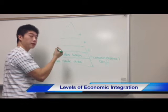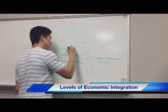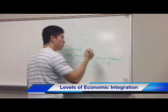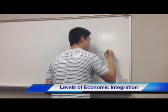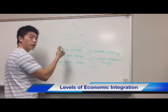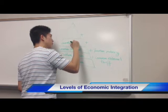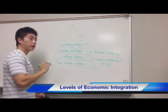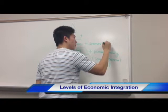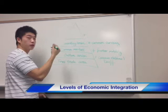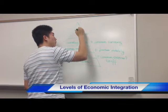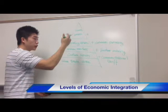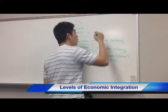Going deeper, we have a common market, which is everything a customs union is plus factor mobility, meaning labor can move freely among countries. After a common market, we have a monetary union, which introduces a common currency. And the deepest level of integration is the economic union, which requires all prior factors plus harmonization of all economic policies.